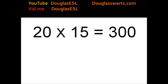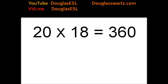20 times 15 equals 300. 20 times 16 equals 320. 20 times 17 equals 340. 20 times 18 equals 360.